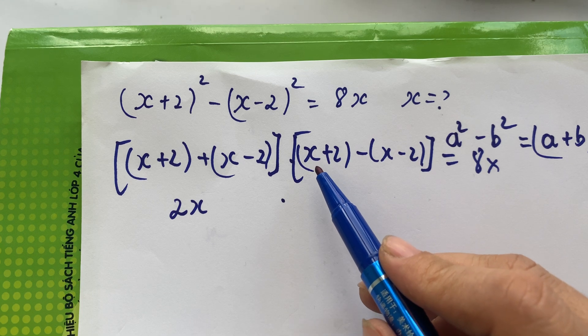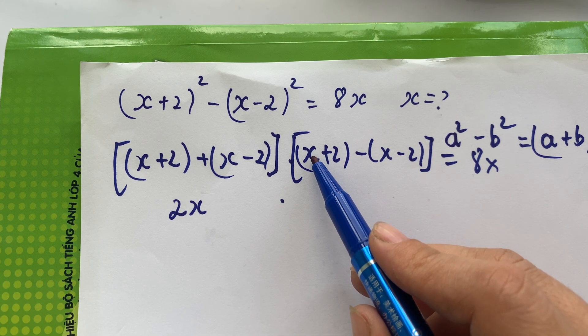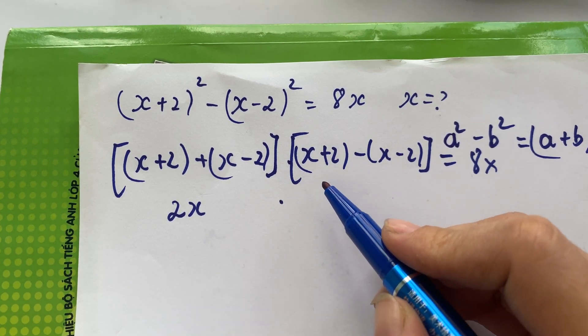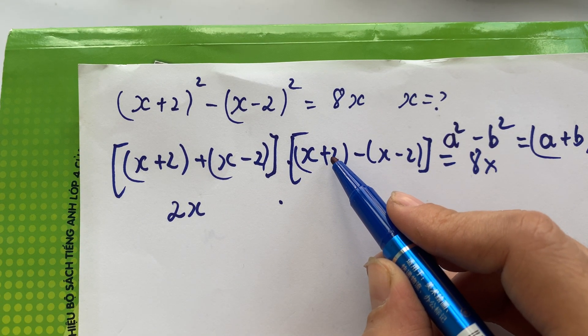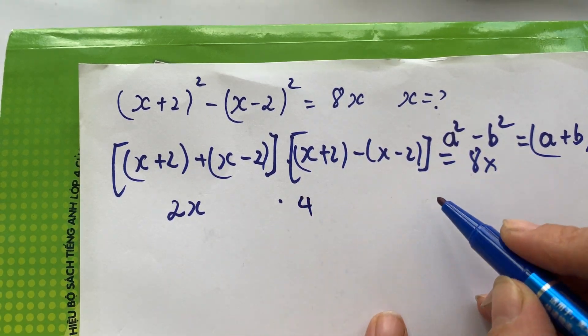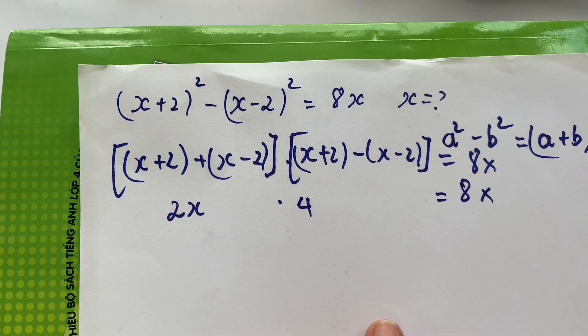Times, you see, positive x minus x cancels. Then 2 plus 2 gives 4, equals 8 times x.